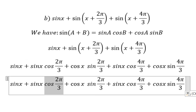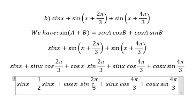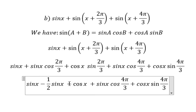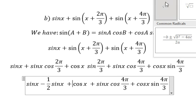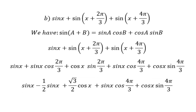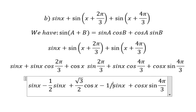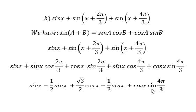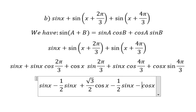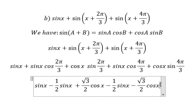For this one we have negative 1 over 2. For this one we have the square root of 3 over 2. For this one we have negative 1 over 2. For this one we have the square root of 3 over 2. Now we simplify everything and you get zero.